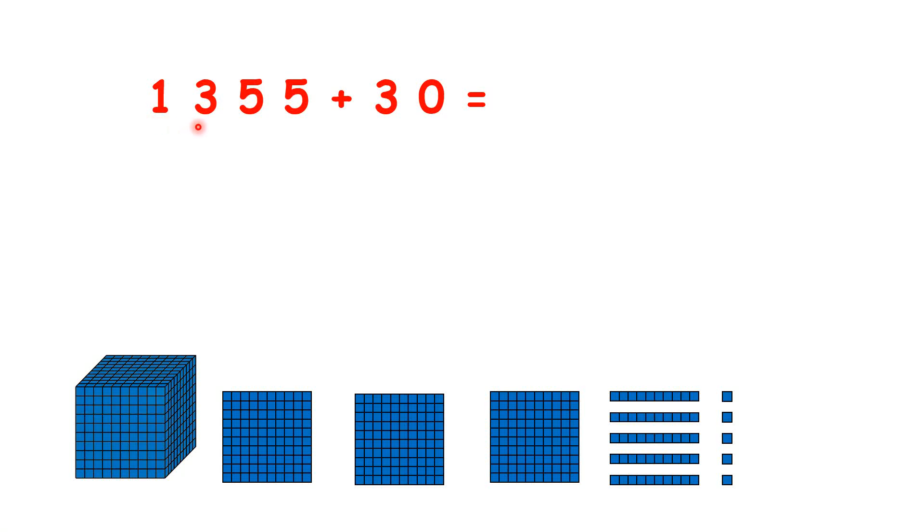Here we have 1,355 plus 30. We have 5 tens in our number, and we want to add 3 tens. So let's add 1, 2, 3 tens. And we have 1,385 because we now have 8 tens.